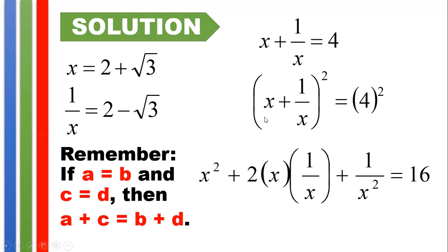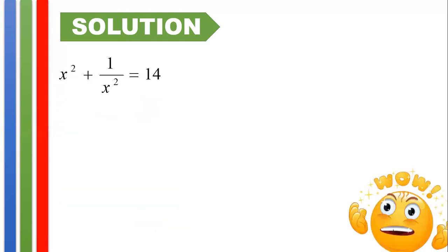That's why we have twice of x times 1 over x plus the square of the last term, which is 1 over x squared, equals the square of 4, which is 16. We could see here in the middle term that 2 times x times 1 over x is equal to 2. Why 2? Because a number multiplied by its reciprocal is equal to 1, provided that that number is not equal to 0. Hence, we have x squared plus 1 over x squared equals 14, because we subtracted both sides by 2.